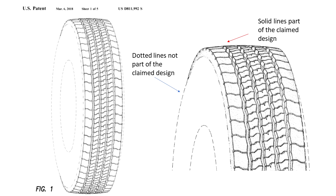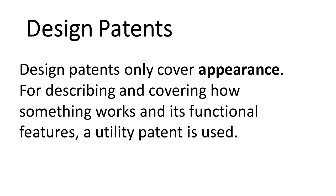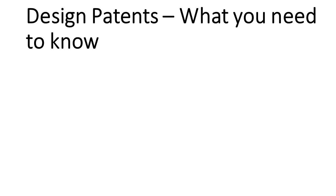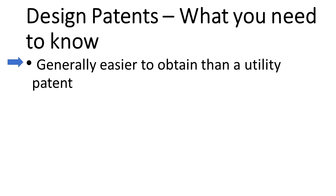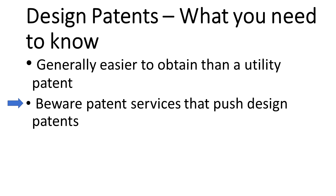Just to recap: design patents only cover appearance. For describing how something works and its functional features, a utility patent is the proper thing to use. A design patent is generally easier to get than a utility patent, because unless there's something that looks very similar in appearance, there is a pretty high chance you will get the design patent to issue. Because it is easy to get, there are some invention services companies that push design patents. However, in many cases the design patent doesn't provide the protection the inventor is looking for — it is often more important to cover how something works rather than how it looks.